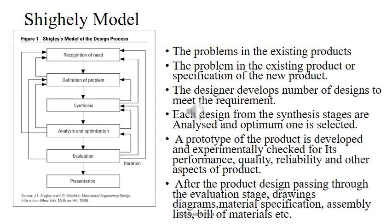The six steps of the Shigley Model are: recognition of the need, definition of the problem, synthesis, analysis and optimization, evaluation, and presentation. Step one, recognition of the need, involves realization that a problem exists in the design or product, identification of some defect in a current machine or design, and identifying new product opportunities. Step two, definition of the problem, involves specifying the item to be designed, including functional characteristics, cost, quality, and performance.